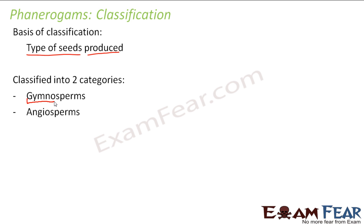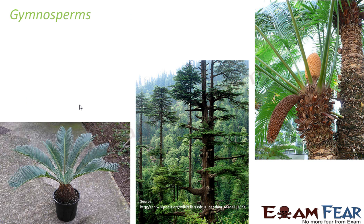The word 'gymno' means naked, 'angio' means covered, and 'sperm' means seed. So gymnosperms are those which produce naked seeds, and angiosperms are those which produce covered seeds. These are the two classifications of phanerogams. Let us look at gymnosperms first — these are the phanerogams with naked seeds, meaning the seeds are not enclosed in anything.